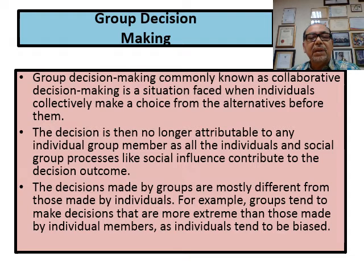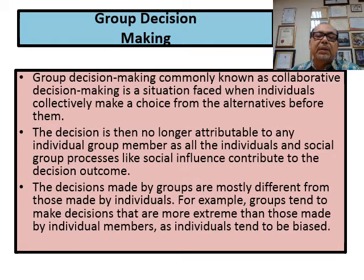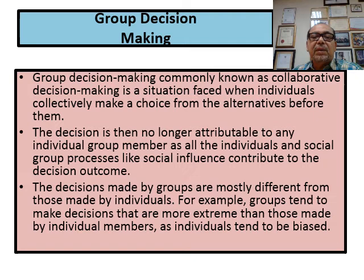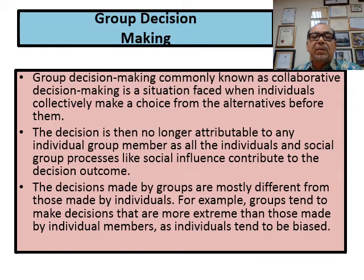Decisions made by groups are mostly different from those made by individuals. Groups tend to make more extreme decisions than those made by individual members, partly because individuals tend to be biased. In a big organization, extreme decisions are needed to be implementable. When one or two people make a decision, they always worry about whether it will go wrong — and they may look for a way out to avoid being blamed.